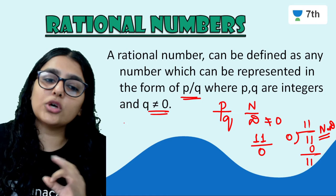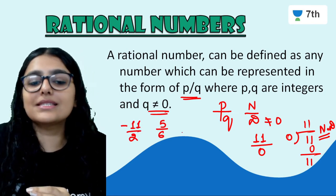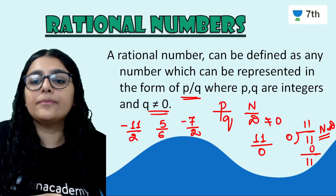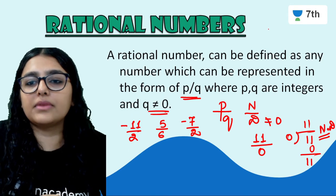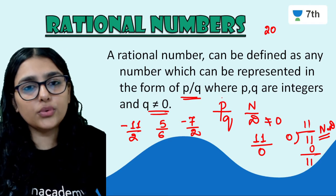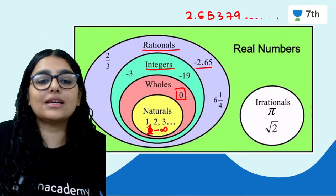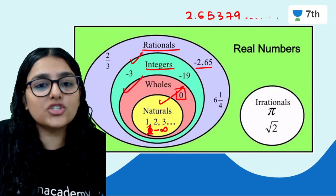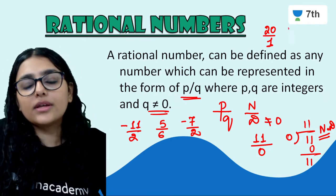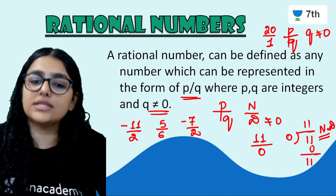I can take any positive or negative numbers. For example, 11 by 2 is a rational number, 5 by 6 is a rational number, minus 7 by 2 is a rational number. If I write a whole number like 20, then 20 is also a rational number because I can write it as 20 upon 1, which is in the form P upon Q with Q not equal to 0. All natural numbers, whole numbers, and integers are part of rational numbers.